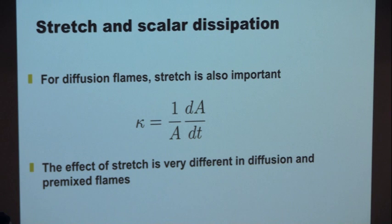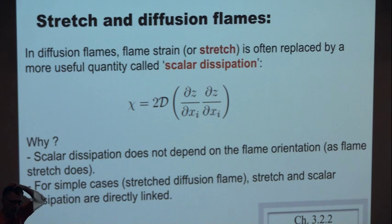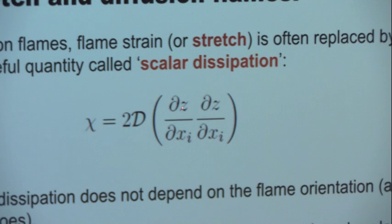In the same way that you can take a premixed flame and stretch it, you can also stretch a diffusion flame. The effect of stretch in a diffusion flame is very different: premixed flames are not very sensitive to stretch to first order, but diffusion flames are incredibly sensitive to stretch. A lot of people prefer to use scalar dissipation instead of stretch. Scalar dissipation is two times the diffusion coefficient of heat or species, multiplied by |∇Z|² — the gradient of Z squared.